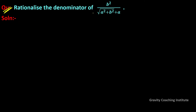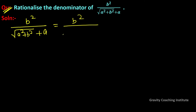Rationalize the denominator of b² upon under root (a² + b²) plus a. So the question is b² upon under root (a² + b²) plus a. According to the question, the denominator corresponds to under root (a² + b²) plus a.